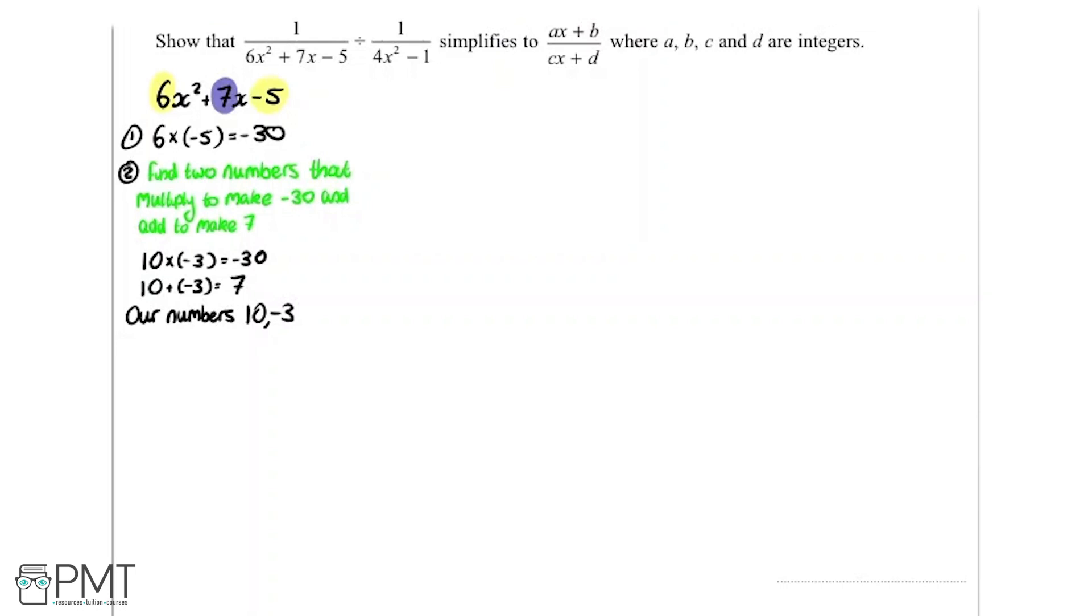And the next step is we write out our brackets and we look up and we see, okay so we've got 6x squared here. So in each of these brackets I'm going to put 6x. And I'm going to fill the other end with the numbers, so we've got plus 10 and minus 3.